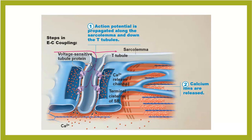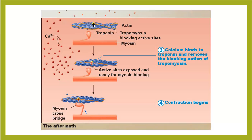Now as this action potential travels right down the transverse tubule, the change in voltage — a voltage-sensitive protein — will cause these proteins to pop open, and that will release calcium from the sarcoplasmic reticulum. Once calcium is released, it will bind to troponin. So troponin and tropomyosin right here are blocking myosin's binding sites on actin. With calcium present, it will bind to troponin, changing the shape and moving tropomyosin, thus exposing the binding sites for the myosin heads on the actin subunits. Calcium binds to troponin, removes tropomyosin, and allows myosin to bind to actin.